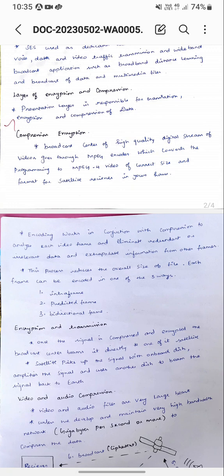Frames can be encoded in one of three ways: intraframe, predicted frame, and bilateral frame.